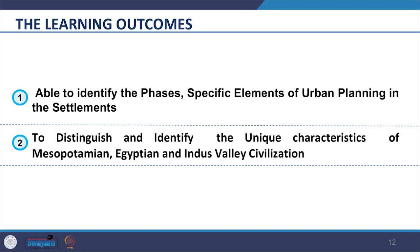Accordingly, the learning outcomes expected after completion of this session are: you should be able to identify the phases of urban evolution, label specific elements of urban planning in these settlements, distinguish them and identify their unique characteristics, and understand what we learn and adopt from these settlements which we study.